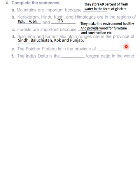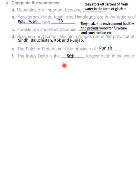The Potohar Plateau is in the province of Punjab. The Indus Delta is the fifth largest delta in the world. With this, we come to the end of this lecture.